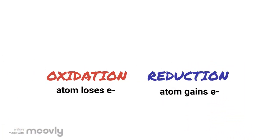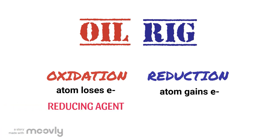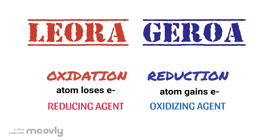To easily remember this pattern, just be familiar with the mnemonic OIL RIG. When an atom loses electrons, it is said to be a reducing agent, while when it gains electrons, it is said to be an oxidizing agent. Remember the mnemonics LEO and GER: losing electrons is oxidation, so it is a reducing agent; gaining electrons is reduction, so it is an oxidizing agent.